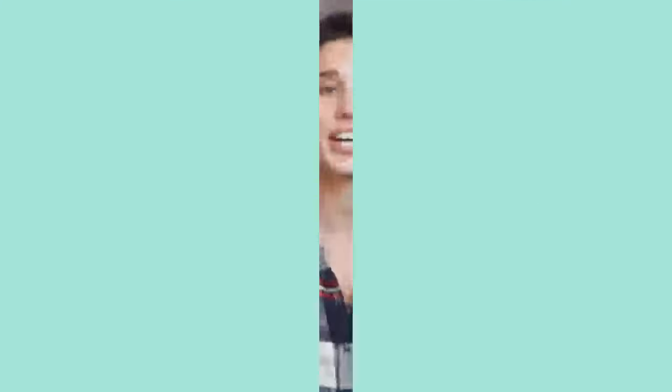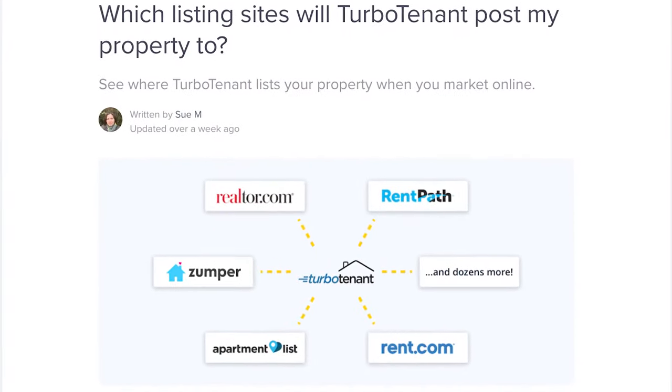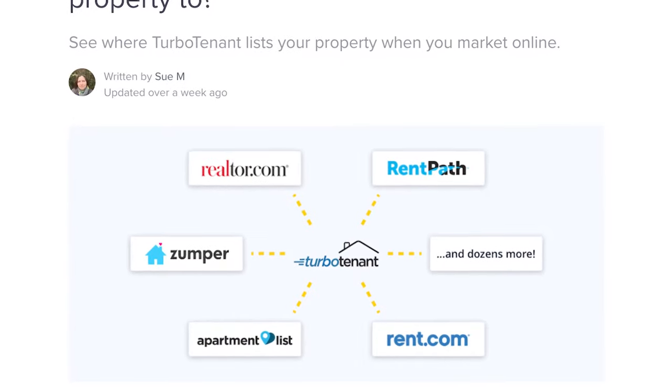The first step is to create a listing. There are many websites you can use to create and syndicate your listing, and I like to use a mix of a few of them. The first location is your property management website. We used to use Apartments.com and just recently switched to TurboTenant. Each management platform will post your listing to a few different sites. TurboTenant does Realtor.com, RentPath, Zumper, ApartmentList, Rent.com, and a few others. On top of all of these, I also like to post to Zillow, Trulia, and Facebook Marketplace. Looking back at our stats, we've actually gotten most of our applicants from Facebook, Trulia, and Zillow.